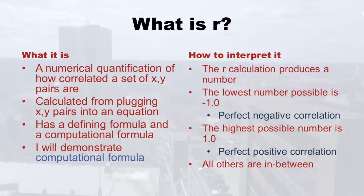So what is r? It's the numerical quantification of how correlated a set of x, y pairs are. It's calculated by plugging all of the x, y pairs into an equation. If you do it by hand with a lot of x, y pairs, it'll take forever. Like with standard deviation and variance, there was a defining formula and a computational formula — this time I'm only going to show you the computational formula. It's way easier to do but gets you the same number.